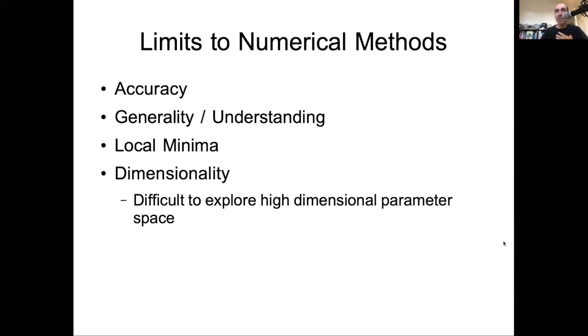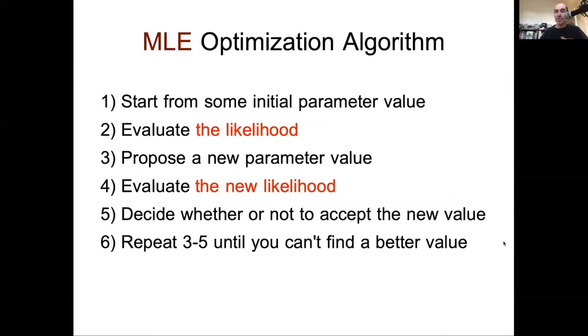So finally, just to wrap things up, what I talked about here was a general algorithm for optimizing anything. Finding the minimum or maximum of anything that you can evaluate a function for. And we'll use that in many cases in modeling and statistics. But if we're using this for the specific problem we're working on right now, which is maximum likelihood estimation, the algorithm is essentially the same with the only real tweak being what you're evaluating. So you start with some initial guess. What you're evaluating as a function is the likelihood. You propose a new parameter value. You then evaluate the likelihood of that new parameter value. You decide whether to accept that new value and you repeat until you can't find a better value.